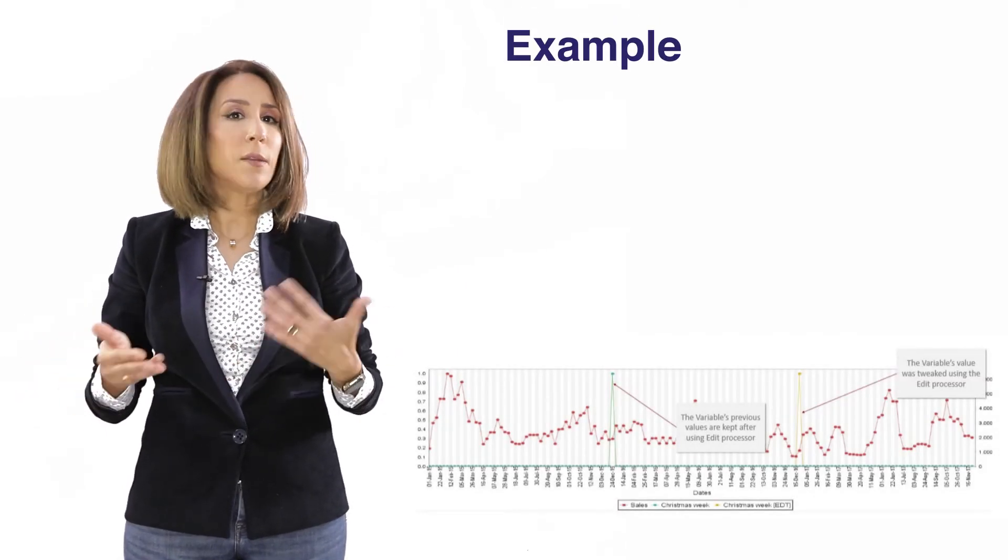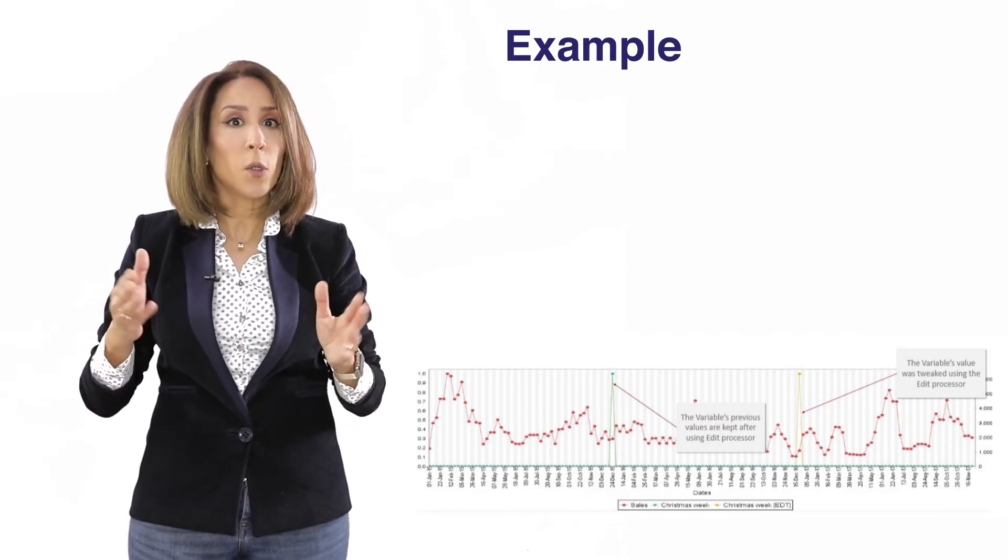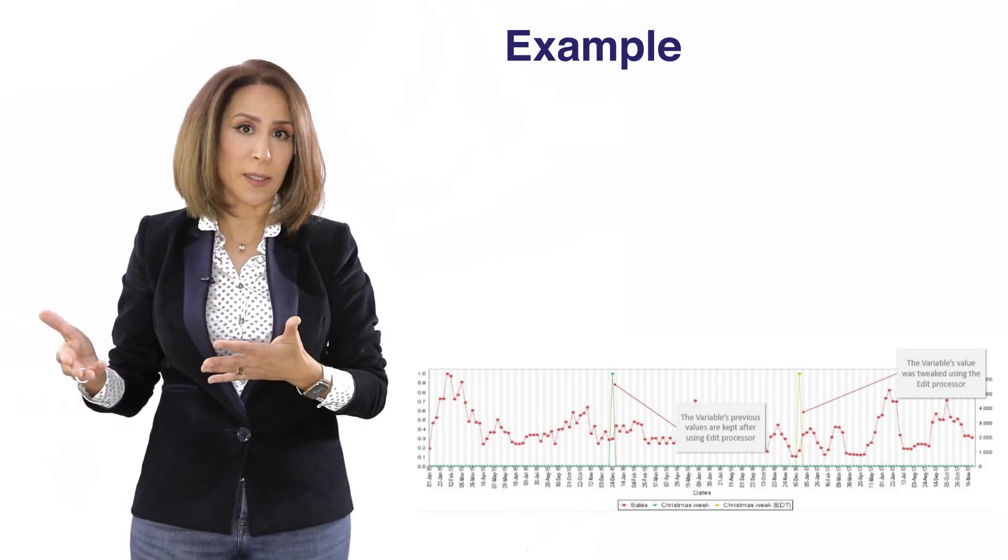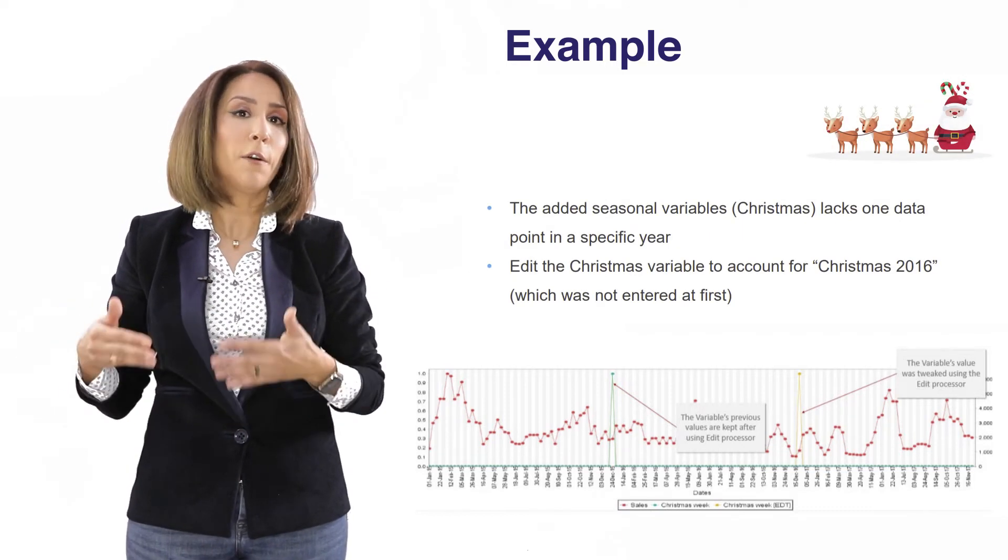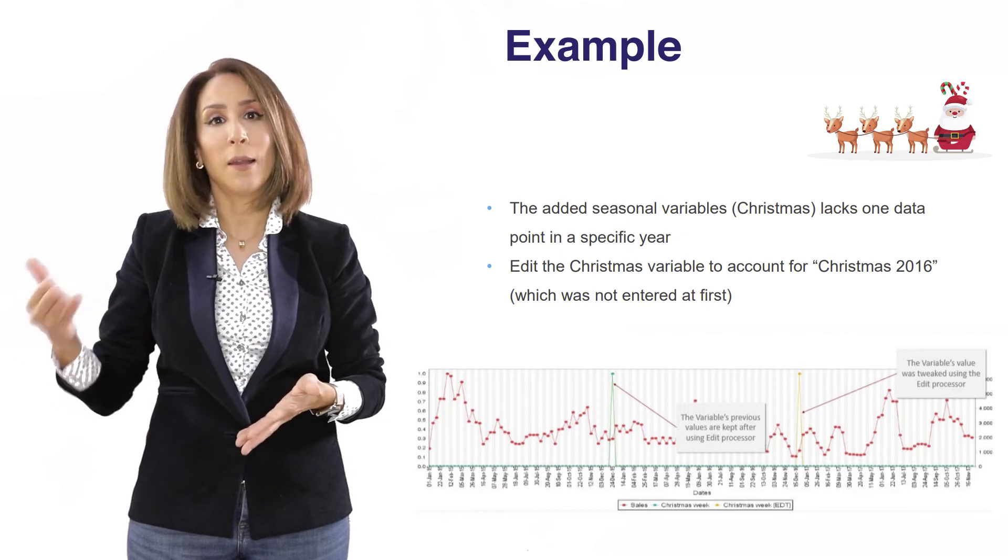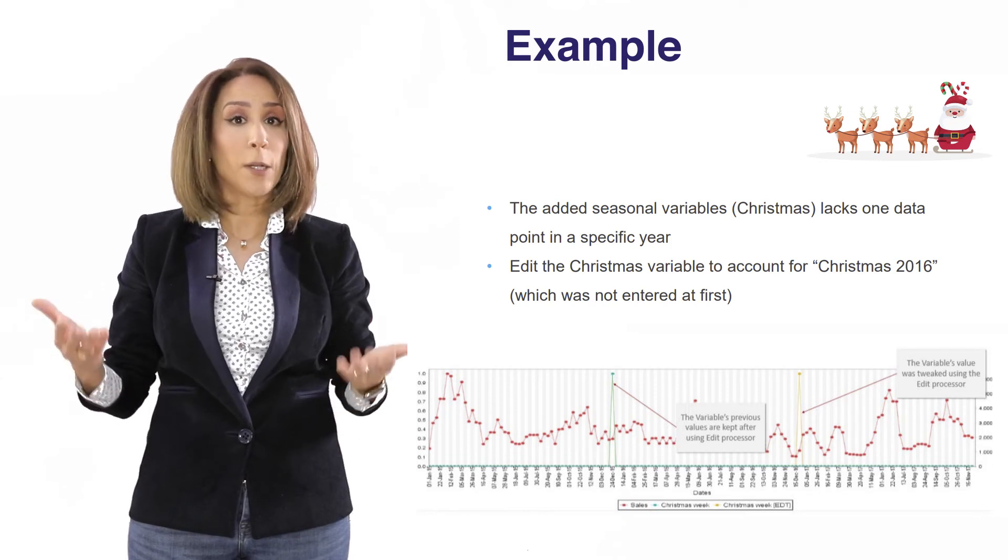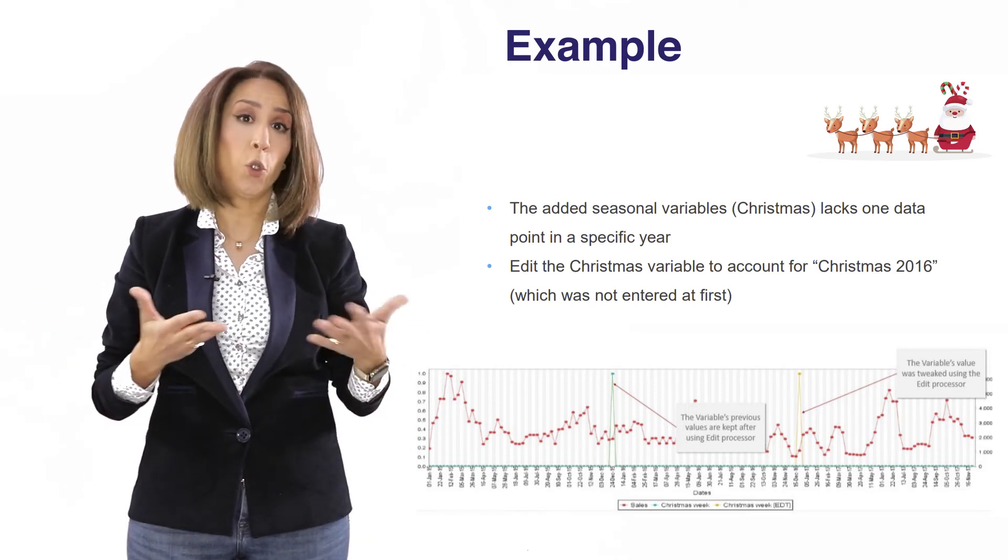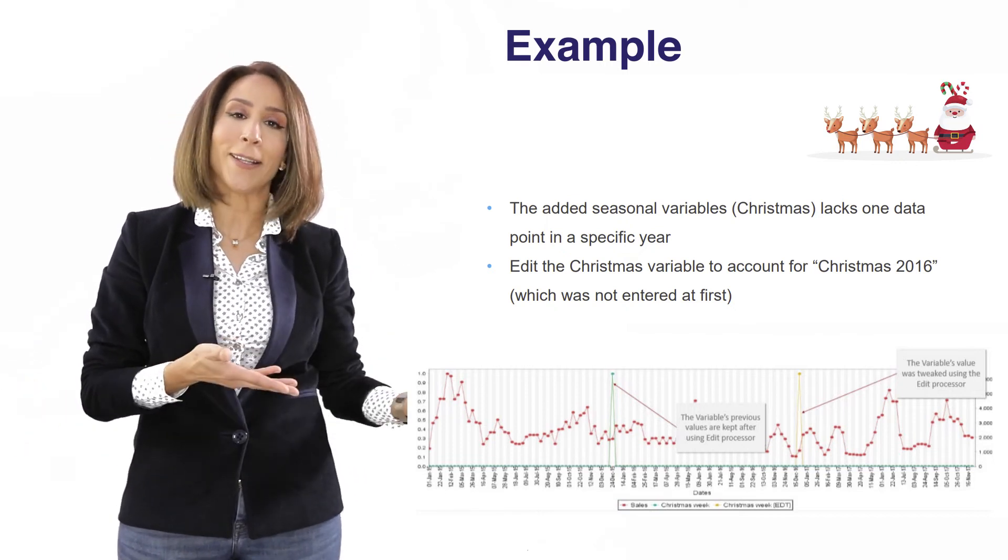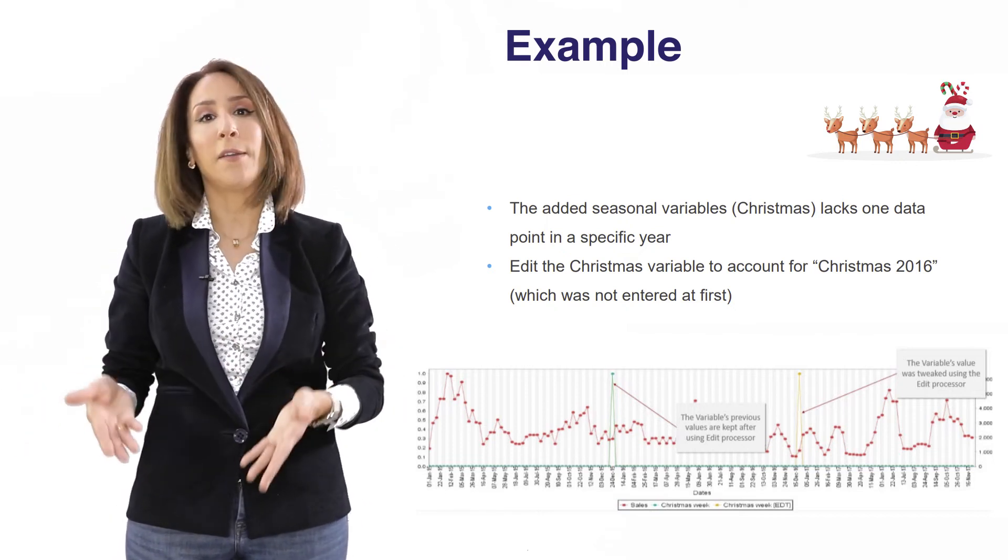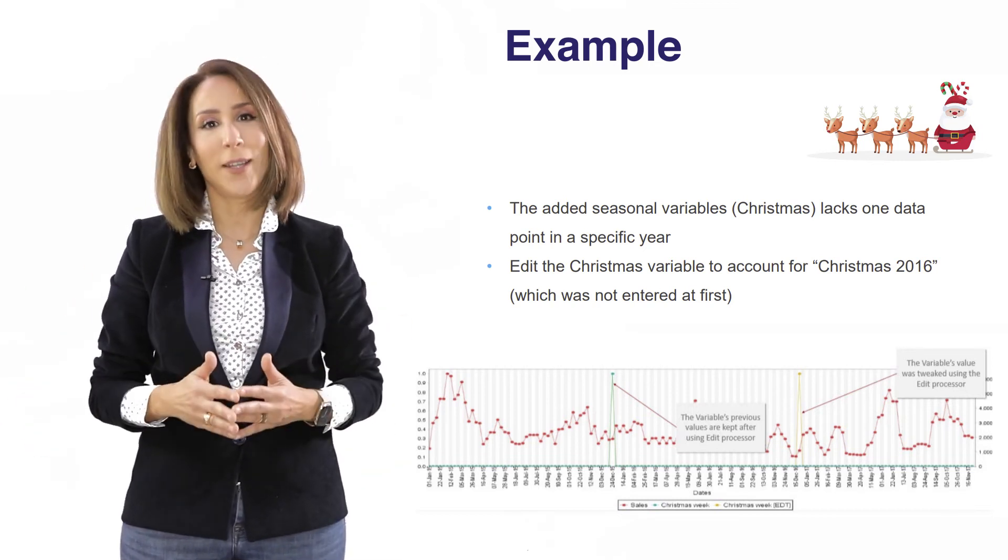For example, we graphed sales data against the Christmas seasonality and when we did that we realized that in one of the years we are missing Christmas so that's why we need to edit back the data in order to make sure that we account for Christmas period during the last year of analysis and that's where we would be using the edit processor. But we know that we have an explanation. We are doing this because we know that Christmas actually happens every single year and in the original data set it was missing and we are now editing the original data set in order to make it more accurate and closer to reality.